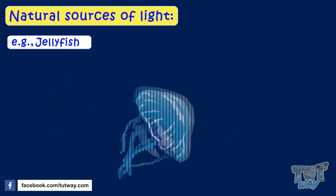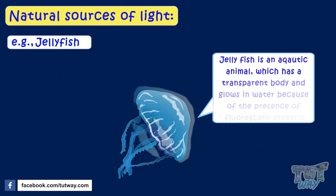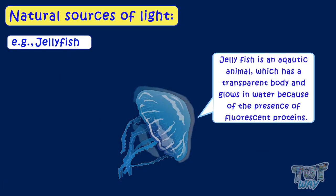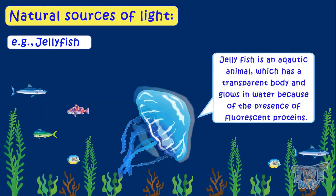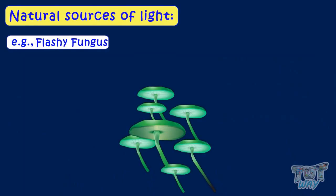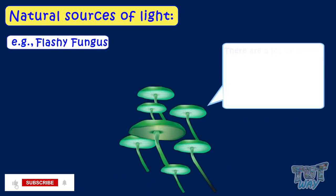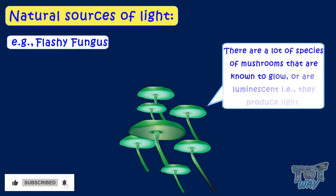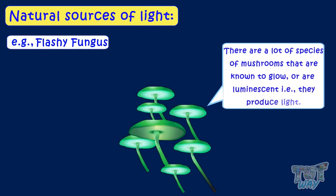Jellyfish is an aquatic animal that has a transparent body and glows in water because of the presence of fluorescent proteins. Flashy fungus — there are a lot of species of mushrooms that are known to glow or are luminescent, that is, they produce light.